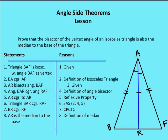We're going to prove using the angle-side theorems that the bisector of the vertex angle of an isosceles triangle is also the median to the base. In the diagram, AR is the bisector of the vertex. We're given triangle BAF is isosceles with vertex angle BAF, so BA is congruent to AF by definition of isosceles triangles. AR bisects angle BAF — that's given — so angle BAR is congruent to angle FAR by definition of angle bisector.